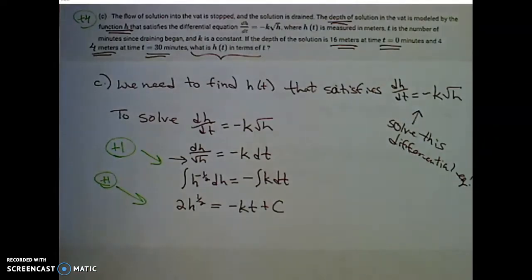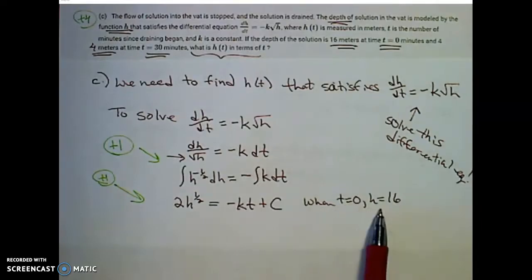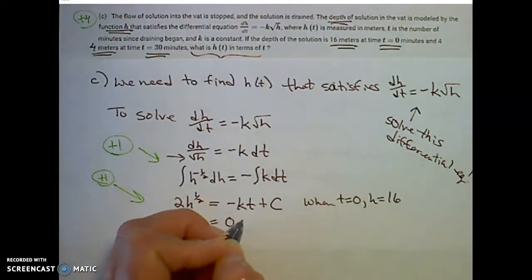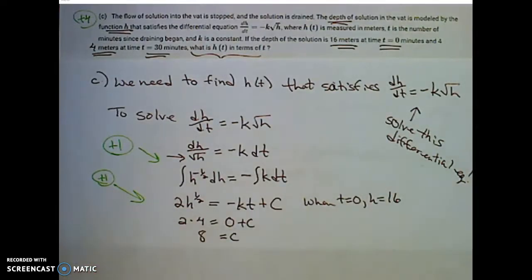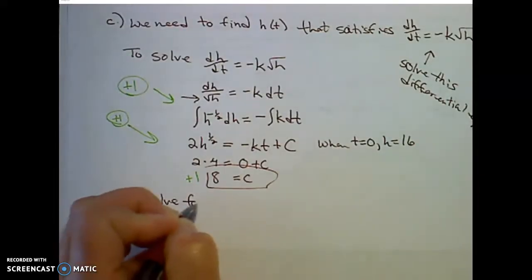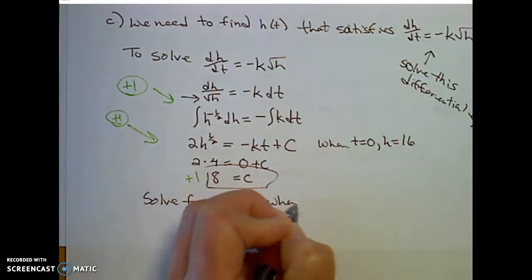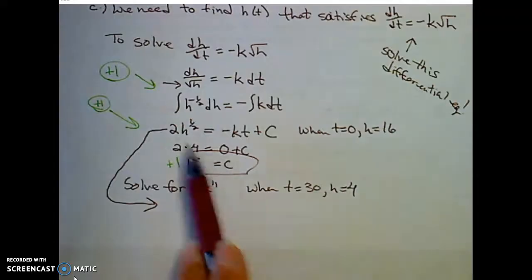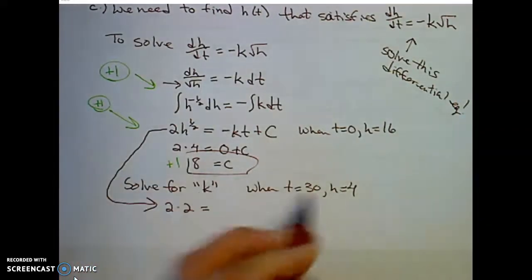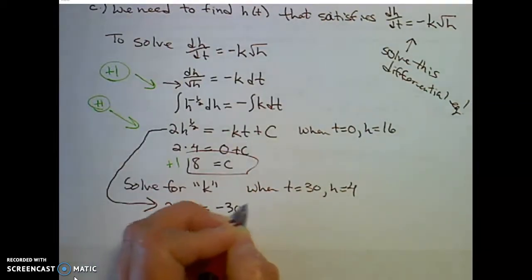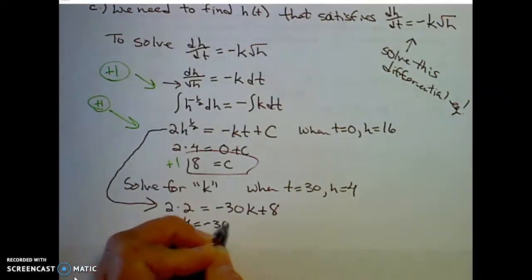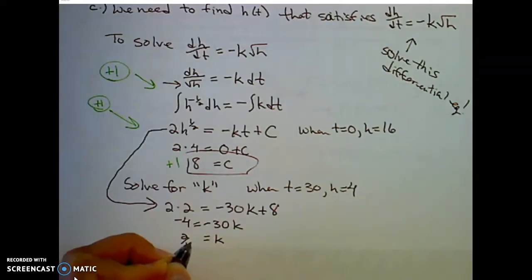Using the initial condition h(0) equals 16: 2 times the square root of 16 equals 2 times 4 equals 8, so 8 equals 0 plus C, giving C equals 8. Now solve for k using h(30) equals 4: 2 times the square root of 4 is 2 times 2 equals 4, so 4 equals negative 30k plus 8. Then 4 minus 8 equals negative 4 equals negative 30k, so k equals two-fifteenths.